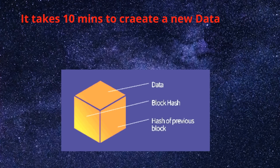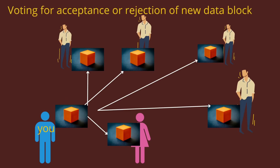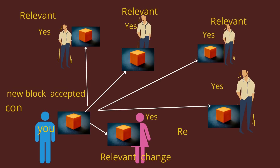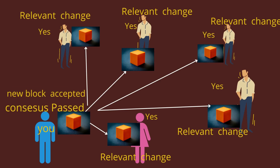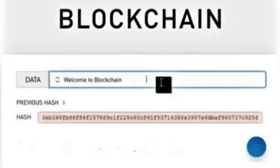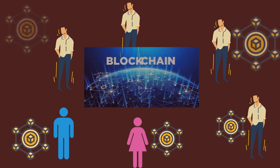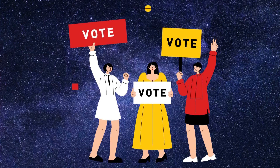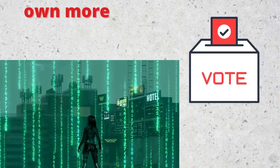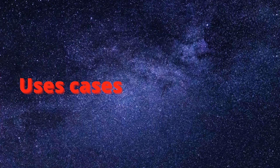The same procedure applies if you want to add a new data block. You will initially have to spend around 10 minutes creating a new data block. After this, you will have to share this copy with everyone on the network to seek approval through voting. If the majority of people agree, only then will this data be added to the blockchain; otherwise, it will be rejected. If anyone wants to harm the blockchain, they will have to spend a lot of time changing the hash of each block — which is practically impossible — and also seek approval for changes by consensus rule through voting. The only other way is to own more than 50% of the network to gain a majority vote share in your favor.